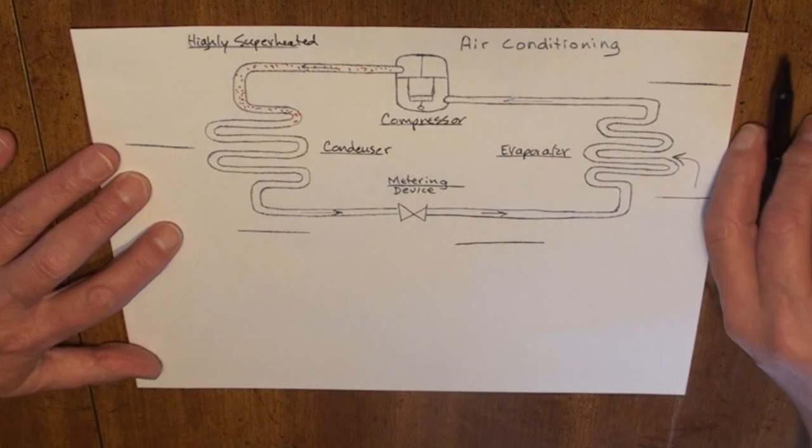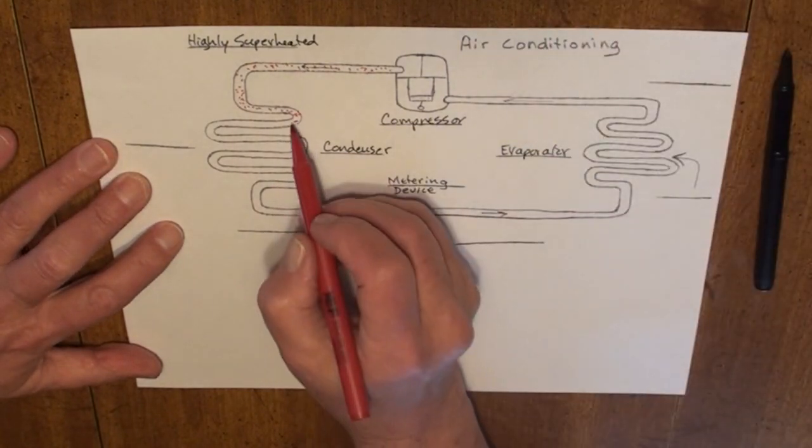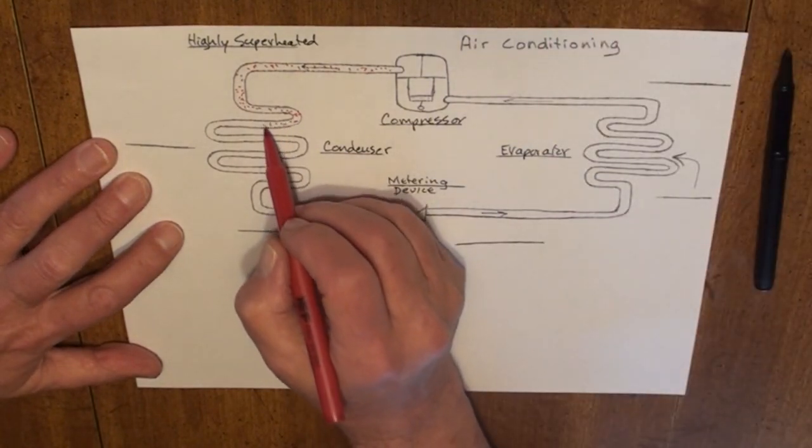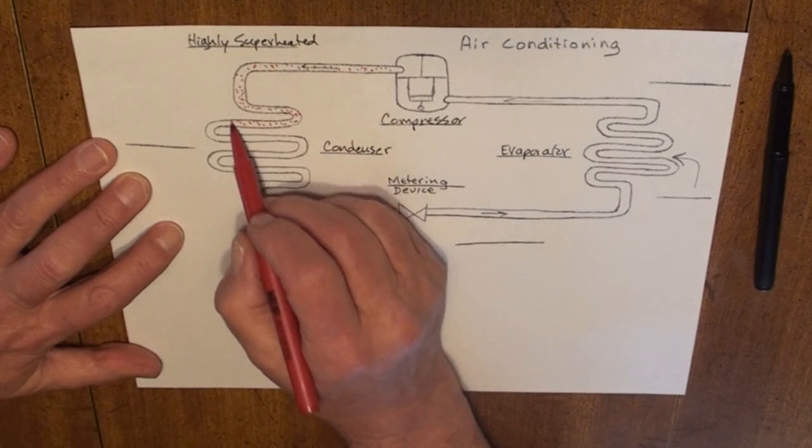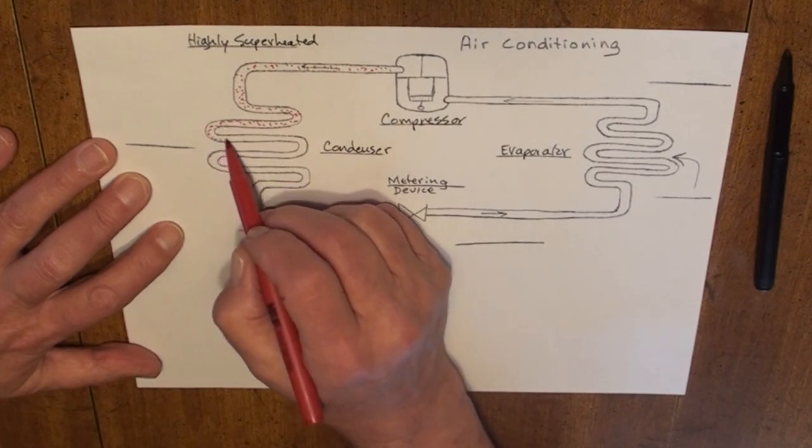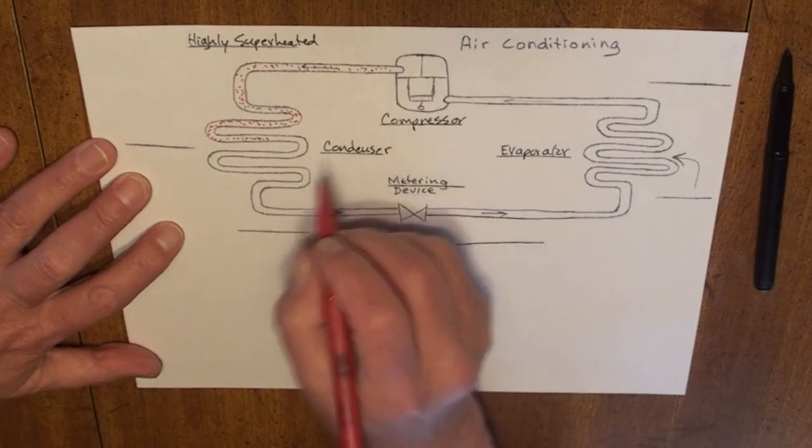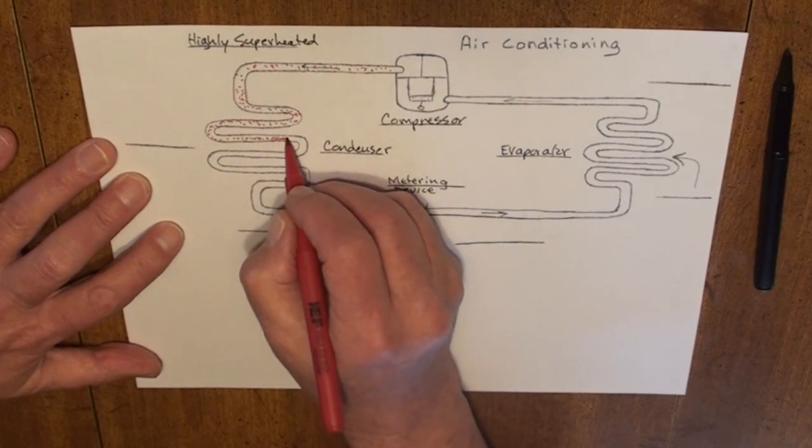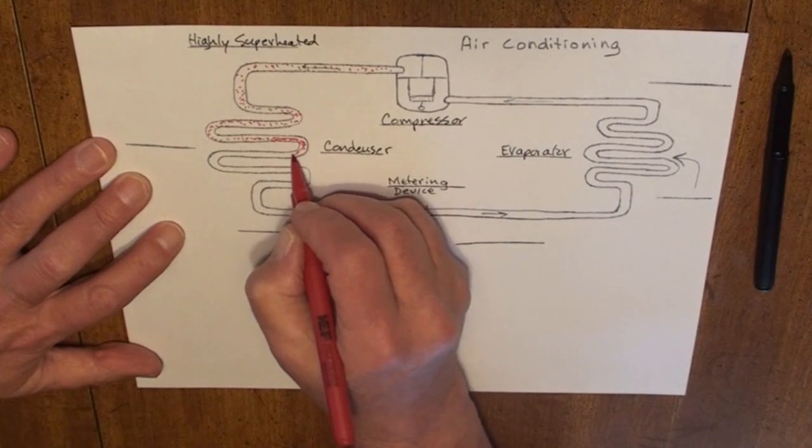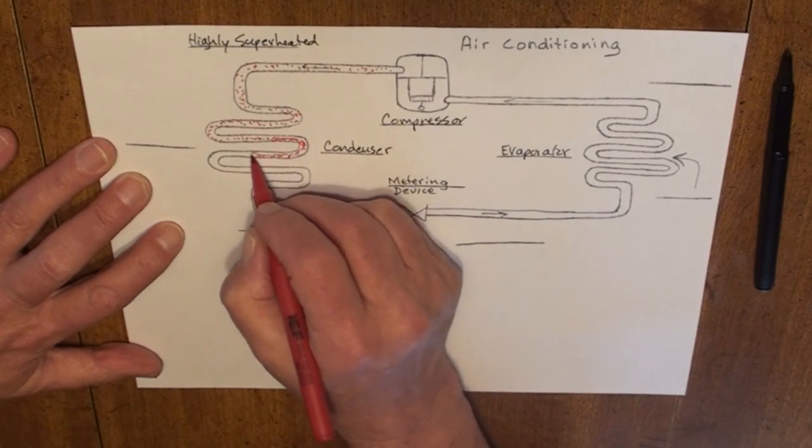It enters the condenser, continues to reject super heat, rejecting sensible heat. At a point about midway through the condenser, some of this gas begins to condense into a liquid.